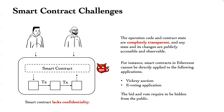However, using smart contracts still confronts many challenges. The most notable drawback is the lack of confidentiality. The operation code and contract state are completely transparent, and any state and its changes are publicly accessible and observable. For instance, smart contracts in Ethereum cannot be directly applied to a bakery auction and a voting application, where bids and votes are required to be hidden from the public, but this cannot be realized for a transparent on-chain smart contract.